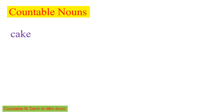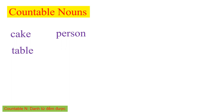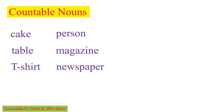The first: countable nouns. I will give you some examples — cake, person, table, magazine, T-shirt, newspaper, bottle, and so on. There are many countable nouns in English. It's very easy to recognize countable nouns.